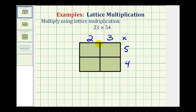The first diagonal would go here. We'll go ahead and extend it past the end of the table, and then we'll have a diagonal here that will pass through both of these rectangles, and then we have a diagonal here.